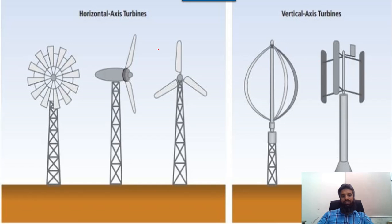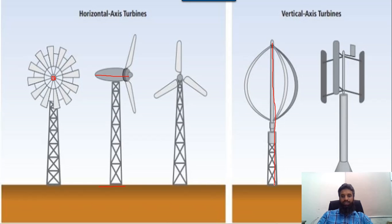As you see in the diagram, there are two types of wind turbine. One is the horizontal axis wind turbine and the second one is the vertical axis wind turbine. In the horizontal axis wind turbine, the center axis of rotation is basically parallel with the surface. The axis of rotation is perpendicular to the surface in the vertical axis wind turbine.